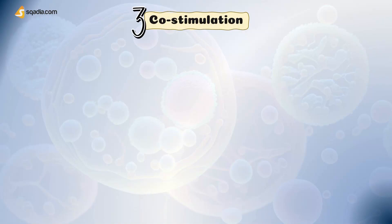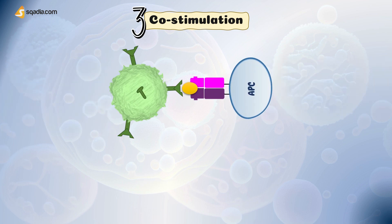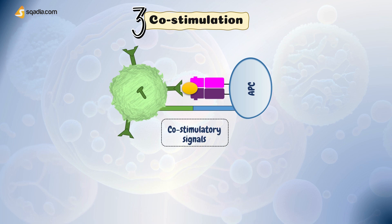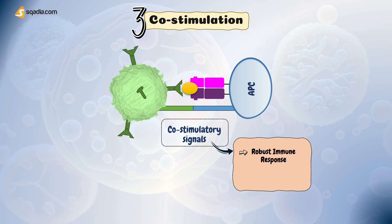Let's briefly have a look at co-stimulation. TCR recognition alone is not sufficient to activate T-cells. Co-stimulatory signals are required to provide additional activation signals and prevent inappropriate T-cell activation. Co-stimulation is a critical step in T-cell activation that provides an additional signal alongside TCR recognition to ensure a robust immune response and prevent inappropriate activation.